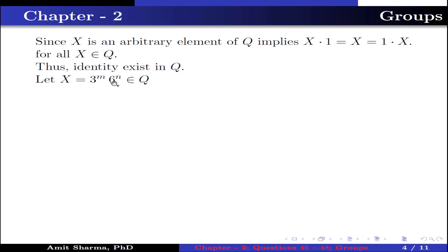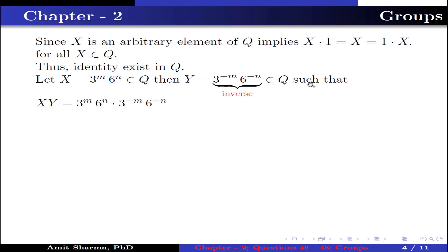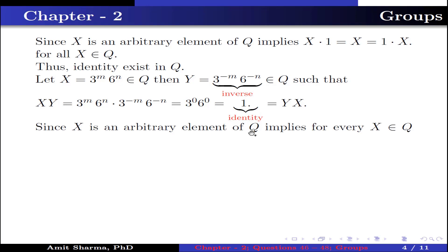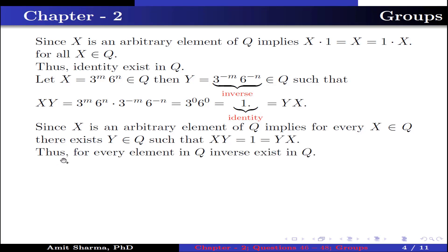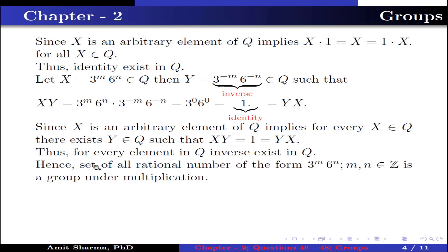Let x = 3^m · 6^n belong to Q, and let y = 3^(−m) · 6^(−n) belong to Q. Then x·y = 3^m · 6^n · 3^(−m) · 6^(−n) = 3^0 · 6^0 = 1 = y·x. Here y is the inverse of x and 1 is the identity. Since x is arbitrary, for every x in Q there exists y in Q such that x·y = 1 = y·x. Thus every element in Q has an inverse. Hence the set of all rational numbers of the form 3^m · 6^n where m, n belong to Z is a group under multiplication.